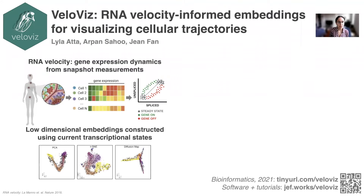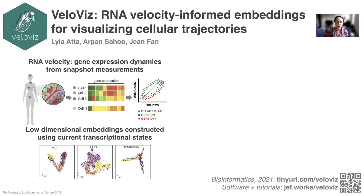RNA velocity is a recently developed method that can take snapshot measurements of single-cell transcriptomics data and use it to infer dynamics of gene expression. This can be used to predict future transcriptional states for single cells. Interpreting the overall trends in cell state trajectories predicted by RNA velocity currently relies on generating low-dimensional embeddings using methods like PCA, t-SNE, and UMAP.